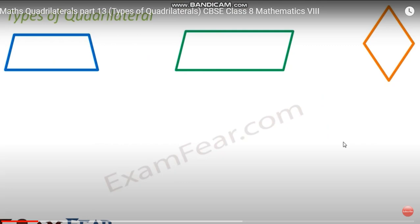Good morning students, welcome back. In the last class we discussed some problems related to understanding quadrilaterals. Today we will discuss the types of quadrilaterals. We know that a quadrilateral is a type of polygon with four sides. Looking at these shapes, all three cases are quadrilaterals because all figures contain four line segments.